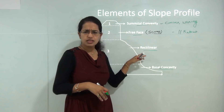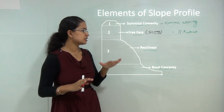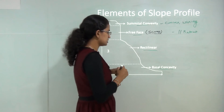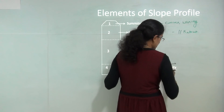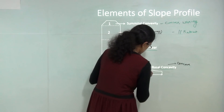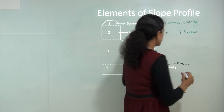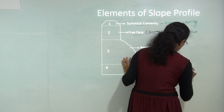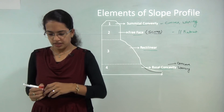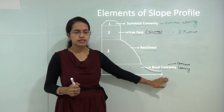The next is the rectilinear slope, which is the most commonly seen slope. It is usually constant, regular, and has a uniform slope in most regions. The next is basal concavity — it is concave and is also known as the waning slope. This is the last section of the slope, found in the lower basement region, and is most predominant in most slope development topographies.